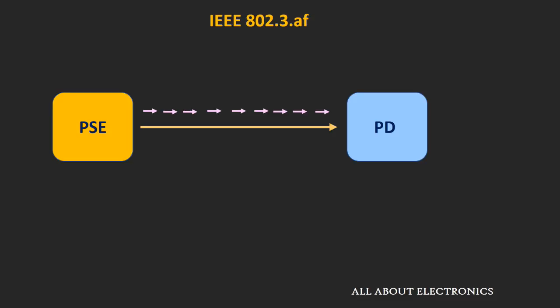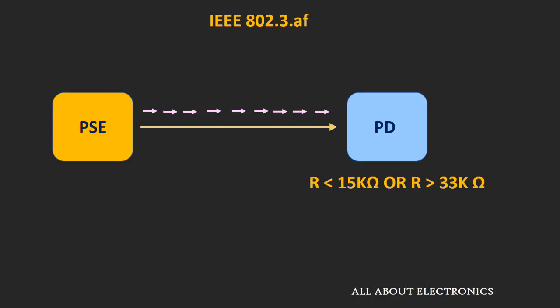Every powered device has some internal resistance which is isolated from the main circuitry. Once the signature detection procedure gets completed, and if the powered device is eligible to receive power from the PSE, then the actual circuit will get exposed to this power source equipment. If the resistance detected by the PSE is in the range of 19kΩ to 25kΩ, then the powered device is eligible to receive power. If the resistance is less than 15kΩ or greater than 33kΩ, the PSE will not supply power to that device.